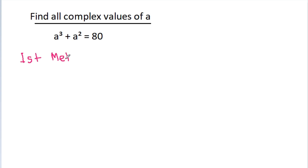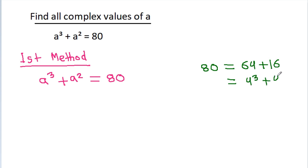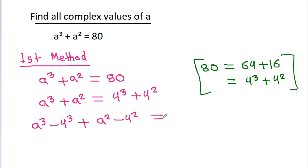First method: we have a³ minus a² is equal to 48, and 48 is equal to 64 minus 16, where 64 is 4³ and 16 is 4². So a³ minus a² is equal to 4³ minus 4², and rearranging: a³ minus 4³ minus (a² minus 4²) is equal to 0.